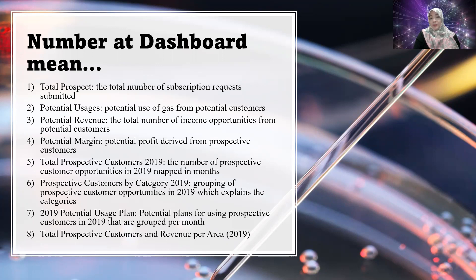The data is also grouped per month. Finally, number eight is total prospective customers and revenue per area in one year.